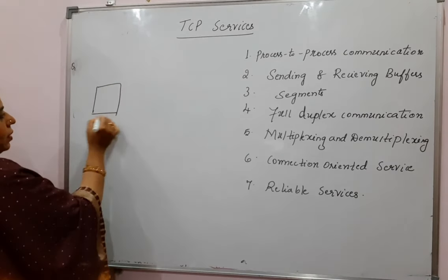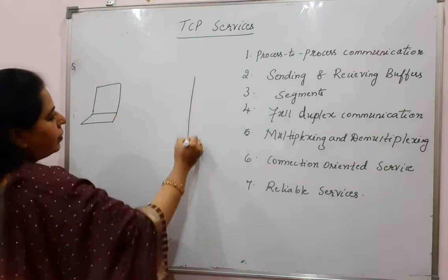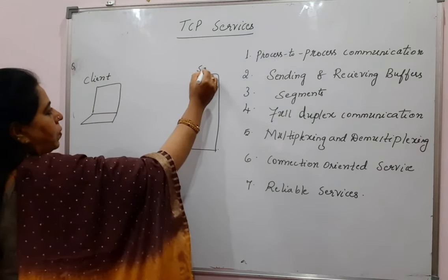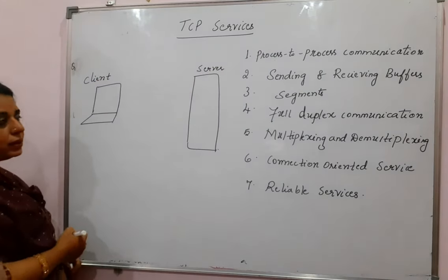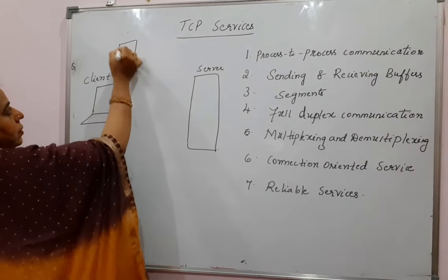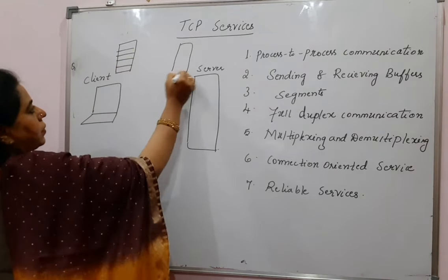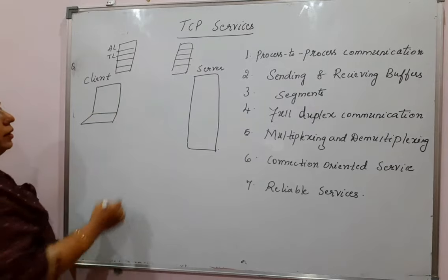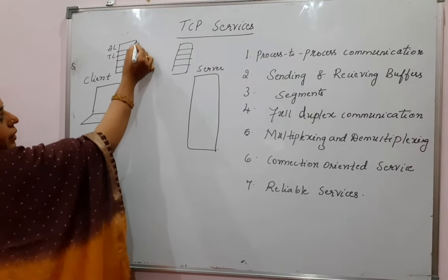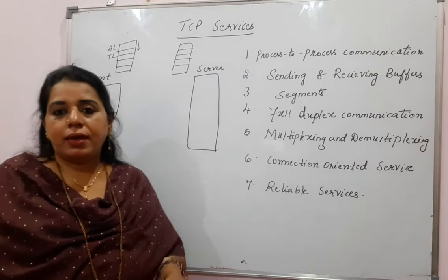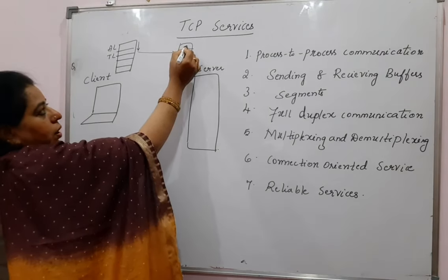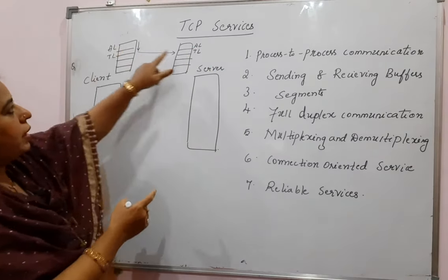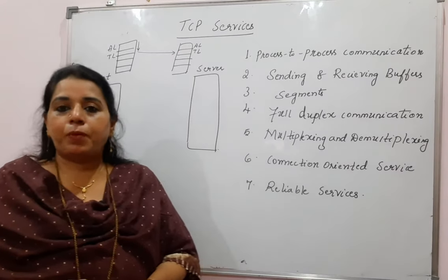Without this, no transport layer will function. You have the client and the server — Transmission Control Protocol, or any transport layer protocol, works in the client-server paradigm. Here you have the TCP/IP protocol suite at both sender and receiver sides. This is the application layer and this is the transport layer. The application program sends data to the transport layer, and the transport layer sends that data to the application layer program running at the server side. There is a process here and a process there — that is how it is called process to process communication.